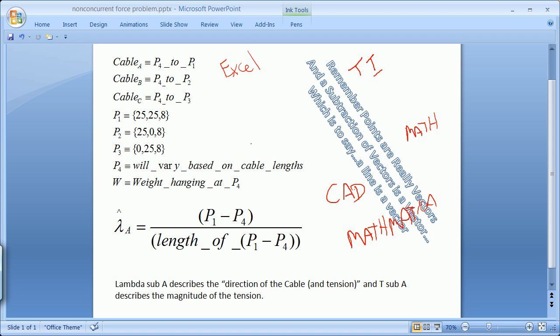So we're looking here, we've looked at it already, but we've looked at a cable here that's going up from point 4, we'll call that point 4, up to point 1, point 2, point 3, and then a weight acting down, W, as a concurrent force problem.